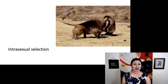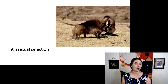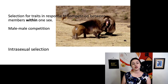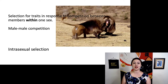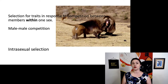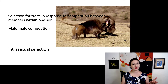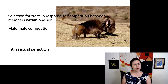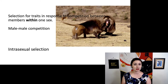There are a couple different types of sexual selection. The first one is intra-sexual selection — intra means within. So this is selection for traits in response to competition between members within one sex, just males with males or just females with females. Usually this ends up being male-male competition, males competing with each other for access to females.